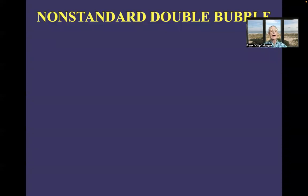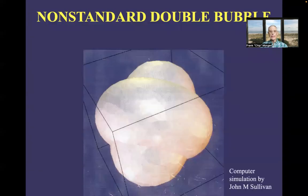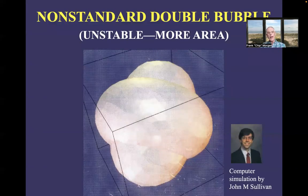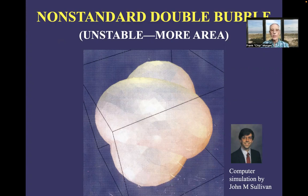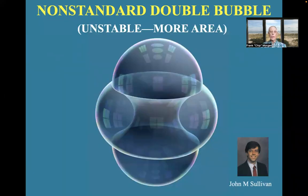But there are other possibilities. Now I'm going to show you a picture of a very strange non-standard double bubble. This is a computer simulation by John Sullivan. You ready for this? So there's one bubble on the inside with another toroidal bubble wrapped around it. And this is unstable and has more area than the standard double bubble. So it doesn't disprove the conjecture. But it does make you realize that there may be other possibilities that neither we nor the bubbles have thought of yet.